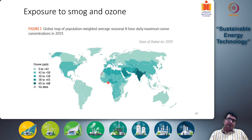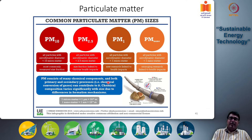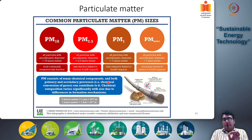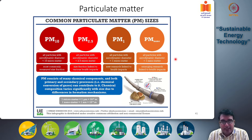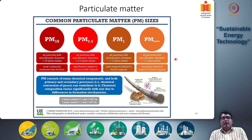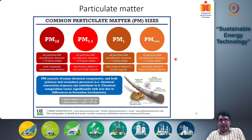Next, we come to particulate matter, often written as PM10, PM2.5, PM1, and PM Nano. These designations refer to the average diameter of the particles: PM10 has 10-micrometer sized particles, PM2.5 has 2.5-micrometer particles, PM1 has 1-micrometer particles, and below that are nanometer-sized particles. PM10 is the most measured, but PM2.5 is the most harmful because it penetrates deep into lung tissue, is carcinogenic, and can cause lung cancer.